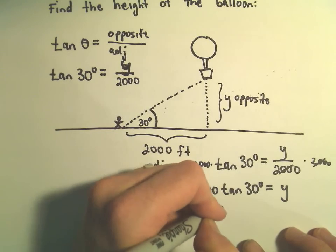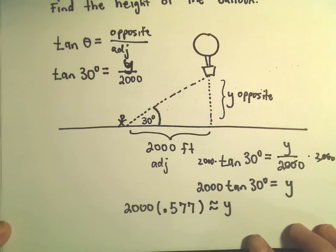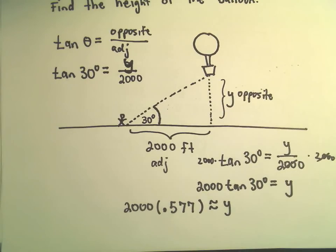So the height of our balloon will be 2,000 times 0.577.